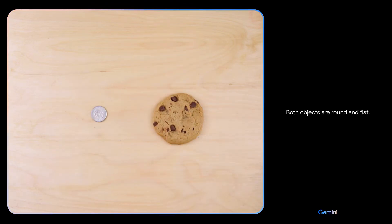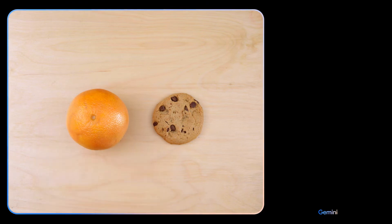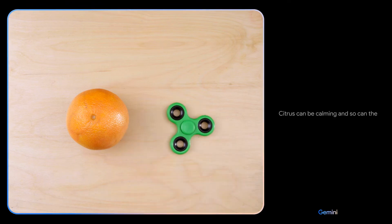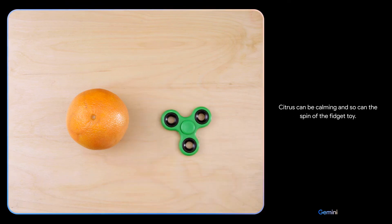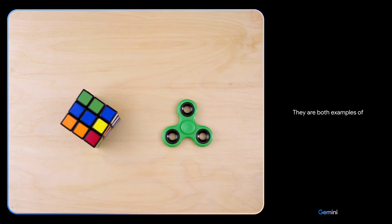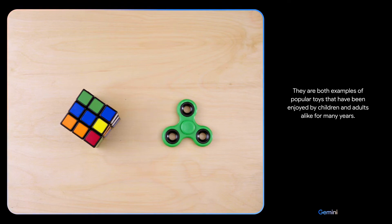Both objects are round and flat. There you go. Both are food. The orange is a healthier choice than the cookie. Citrus can be calming and so can the spin of the fidget toy. They are both examples of popular toys that have been enjoyed by children and adults alike for many years.